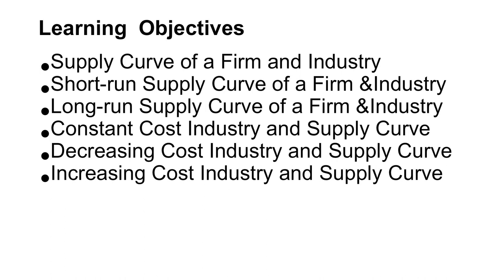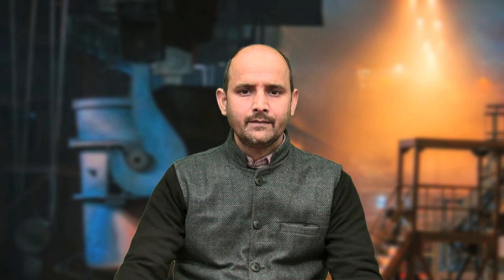We will also cover the supply curve in the case of constant cost industry, decreasing cost industry, and increasing cost industry. These are the aspects we are going to discuss in today's session. First, we start with the supply curve of firm and industry. Basically, supply curve indicates various quantities of the product that producers are ready to produce and sell at different prices.